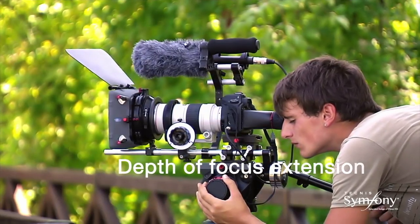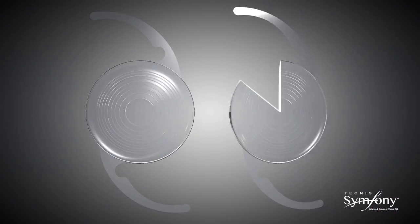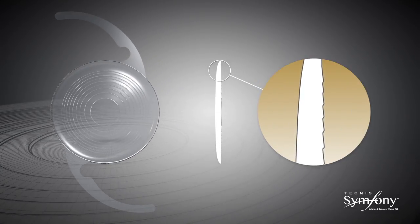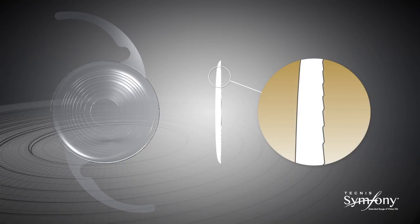The new Symphony lens uses diffractive optics to extend the depth of focus into a focal range by designing the steps on the backside of the IOL in just the right way so the light focuses over a large range of distance.